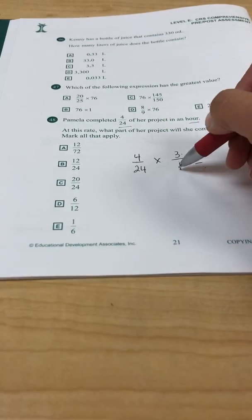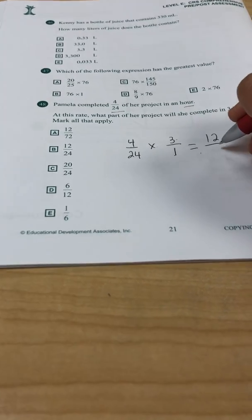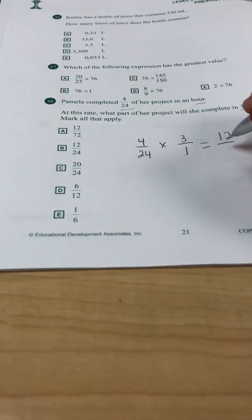Top times top, bottom times bottom. 4 times 3 is 12. 24 times 1 is 24.